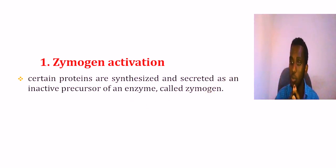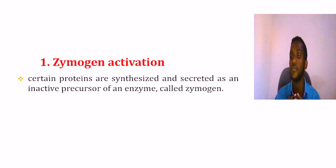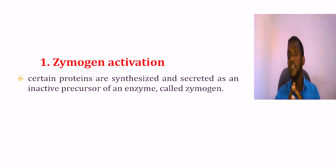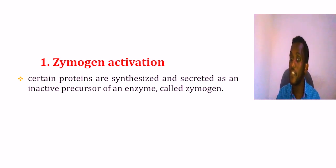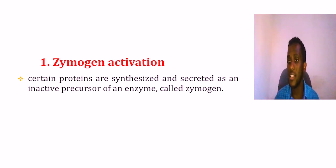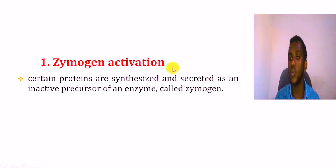This is active protein — active protein completely formed — but the enzyme is initially inactive. This is zymogen. To make the enzyme active, zymogen is the inactive precursor that gets activated to form the active protein.